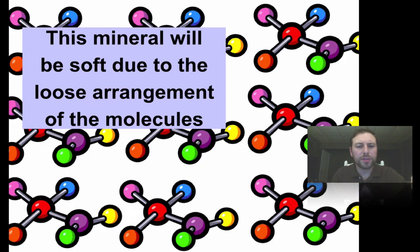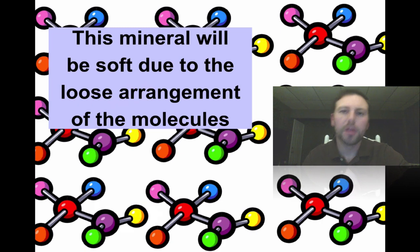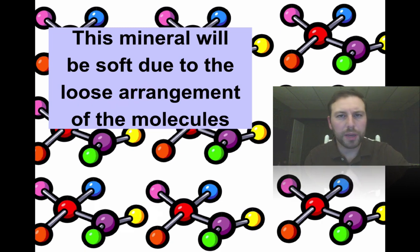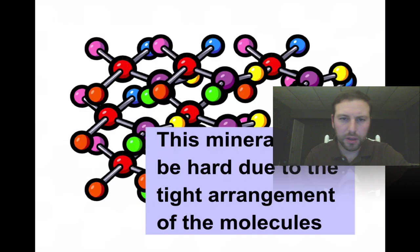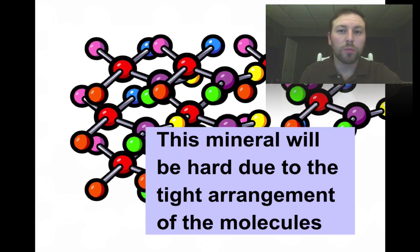A mineral's hardness is determined by the arrangement of the molecules inside. A loose arrangement of molecules will make it a softer material — you can see here that they're very spaced apart, so that mineral will be scratched quite easily. Versus a mineral where the internal arrangement of atoms or molecules are extremely packed together, which will be more resistant to being scratched.